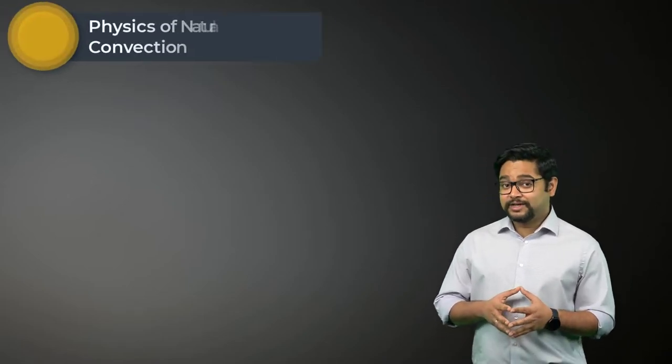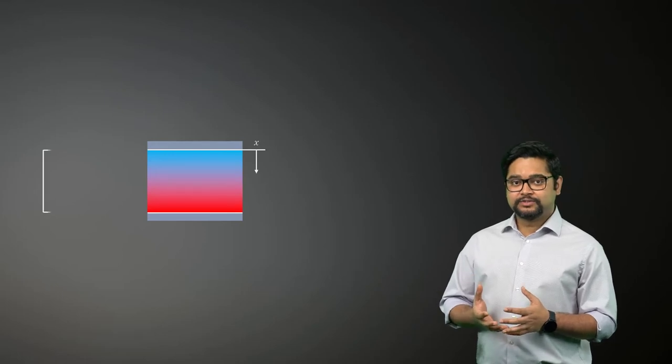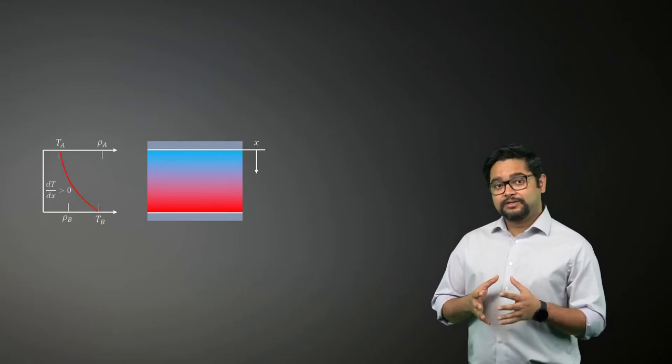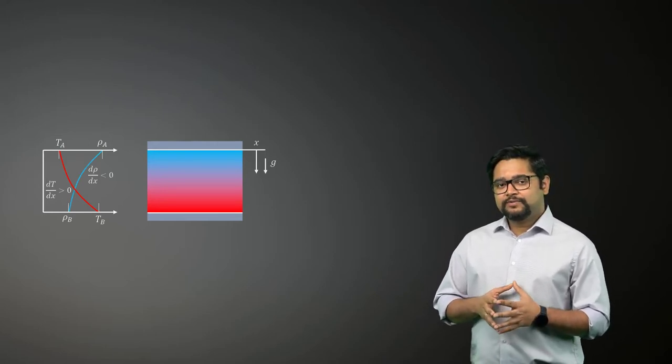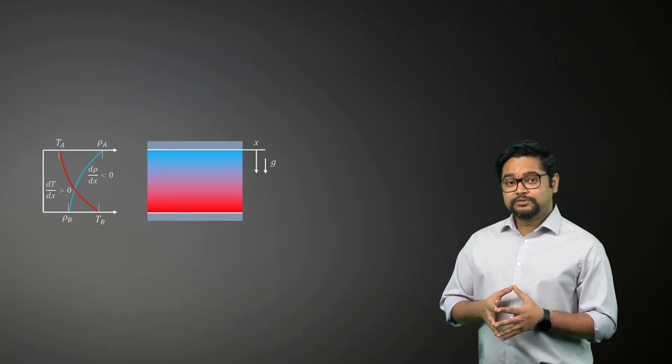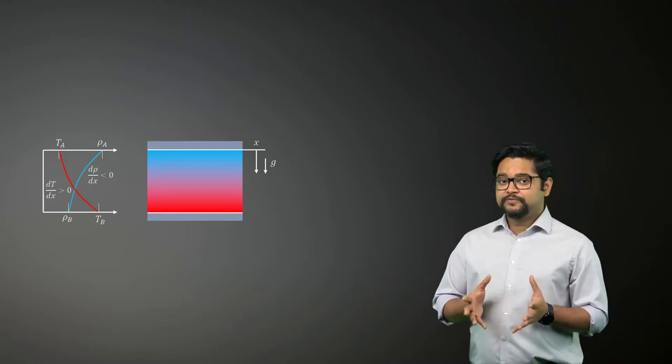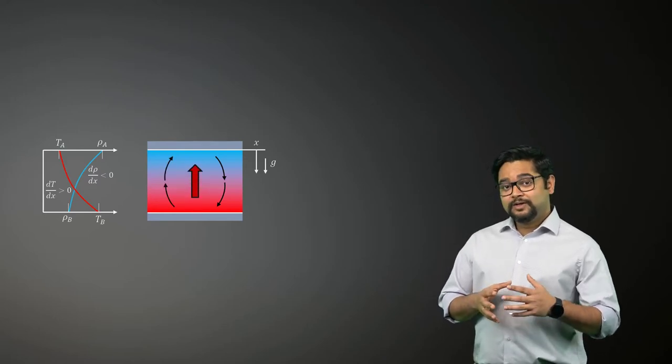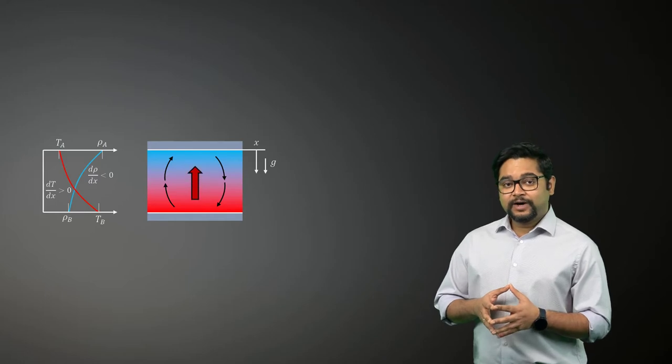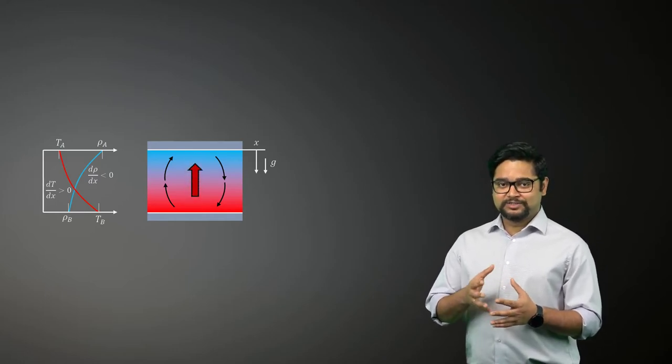Now let's explore these natural convection currents in detail using the following example. Consider the conditions shown here. The fluid is enclosed by two large horizontal plates where the lower plate is at a higher temperature than the upper plate. As a result, the density decreases in the direction of the gravitational force. If the temperature difference is such that the buoyancy forces can overcome the viscous forces, fluid circulation would begin. The heavier fluid will descend being warmed in the process, while the lighter fluid will rise and cool down as it moves.